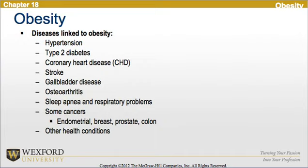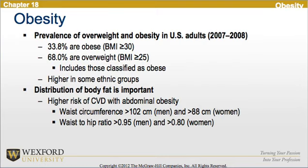Looking at obesity, there are several diseases linked to it, including hypertension, type 2 diabetes, coronary heart disease, stroke, gallbladder disease, osteoarthritis, sleep apnea and respiratory problems, as well as some cancers — endometrial, breast, prostate, and colon. The prevalence of overweight and obesity in U.S. adults from 2007 to 2008 shows 33% of individuals are obese and 68% are overweight, which is higher in some ethnic groups than others.